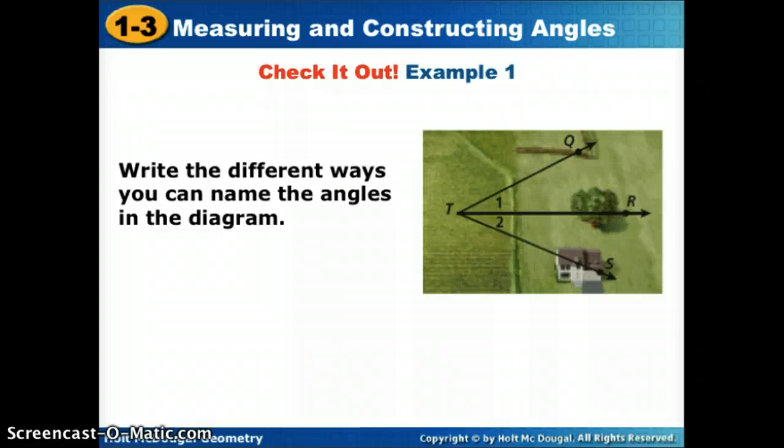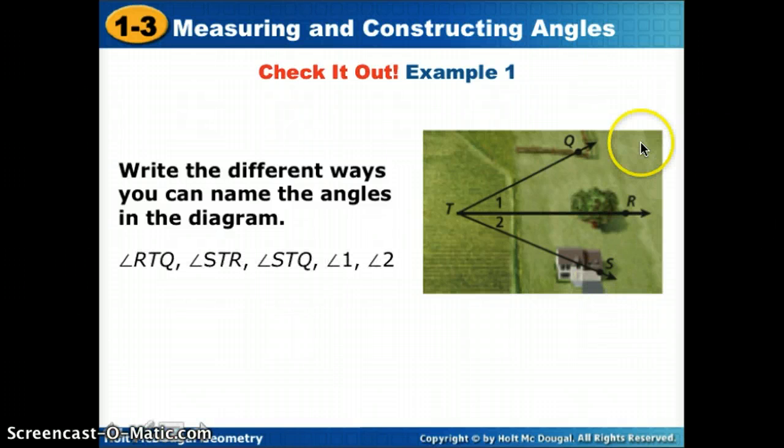Let's look at an example on how we name different angles. In this diagram, you'll see numerous angles, and there's a couple ways to name each of them. If I wanted to name just this top part, I could call it angle QTR, or I could call it angle 1. If I wanted to do the bottom, I could call it RTS, or angle 2. There's also one big angle containing both of them that we could call STQ. Just like with planes, it's okay to switch these letters as long as the vertex stays in the middle.